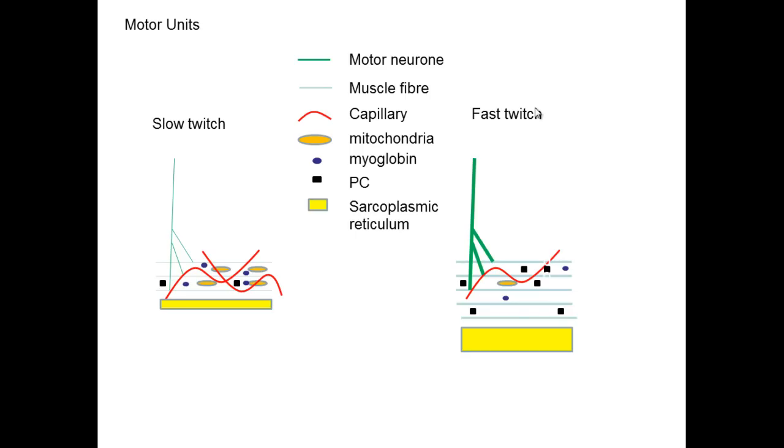The difference between fast oxidative glycolytic and fast glycolytic: if this was to represent our fast glycolytic, and we had another diagram here showing fast oxidative glycolytic, that would show slightly less mitochondria than here and slightly more than here. You'd see probably a slightly smaller proportion of PC than here, but greater than here. Basically, a fast oxidative glycolytic is in between.